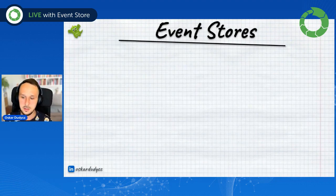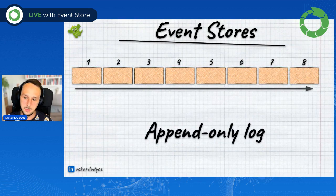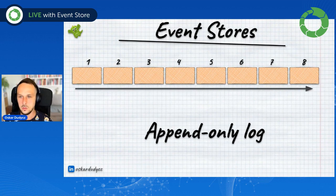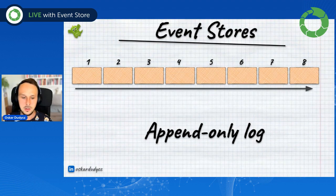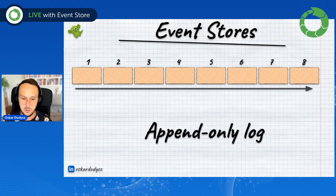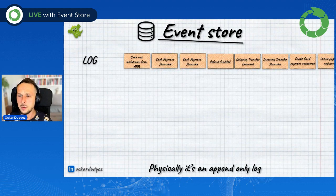How event stores work and why is the bank account example so important? Typically event stores are explained as an append-only log, which is correct because most event stores, including EventStoreDB, are built on top of an append-only log. However, we are not always getting all events from the whole history, because this append-only log contains events from multiple streams — from multiple records and even multiple types of records. So all the events end up in this append-only log, forming a huge global log of everything registered in our system.